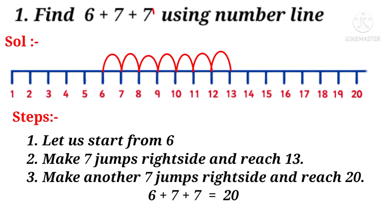After 13, again plus 7 indicates again right side 7 jumps. So 1, 2, 3, 4, 5, 6, 7. Then we reach number 20. So 6 plus 7 plus 7 is equal to 20.